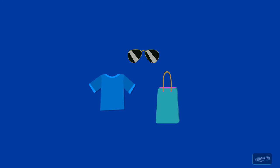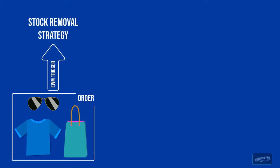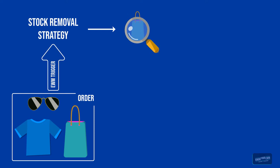Let us assume we create warehouse tasks for an outbound delivery order. Someone ordered a whole lot of different items and our warehouse needs to pick those items in order to deliver them. The EWM triggers a stock removal strategy and searches for the different items.